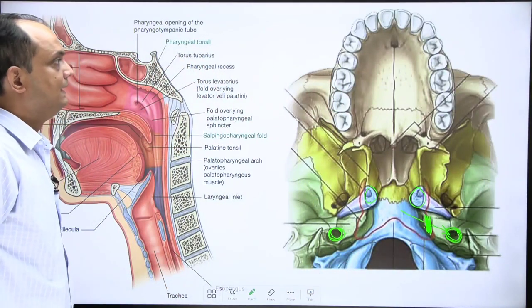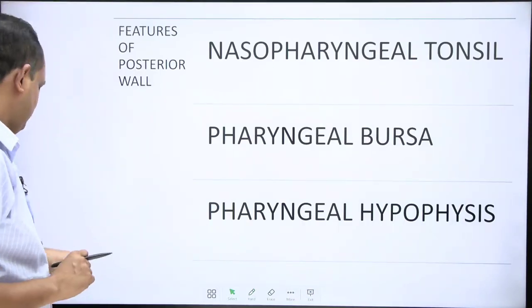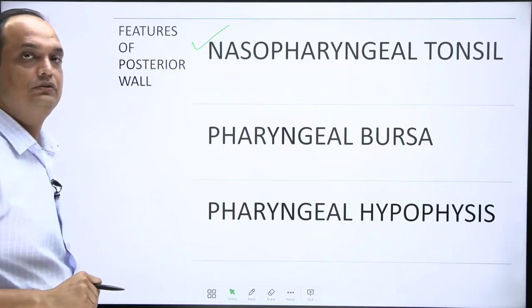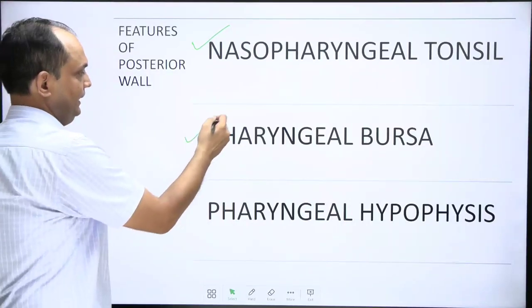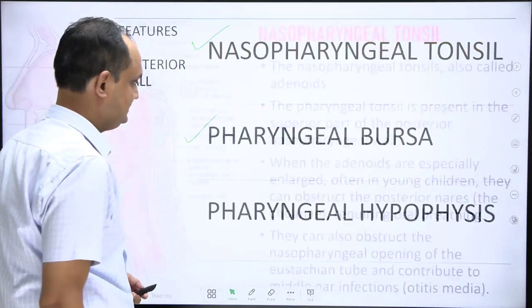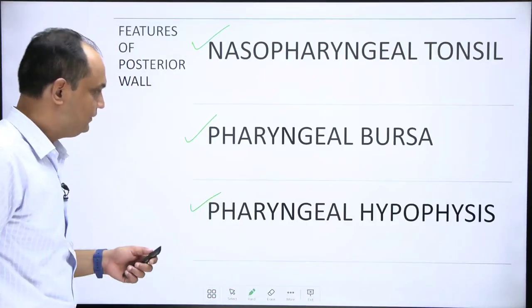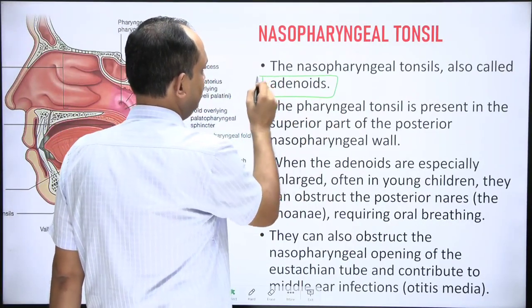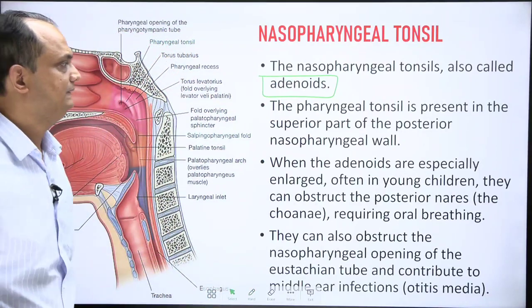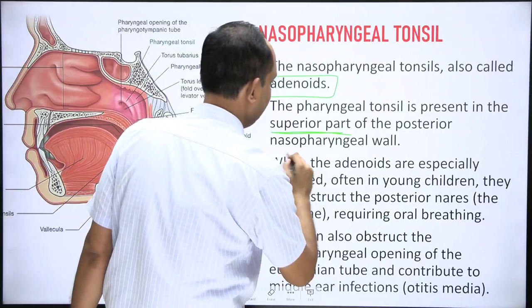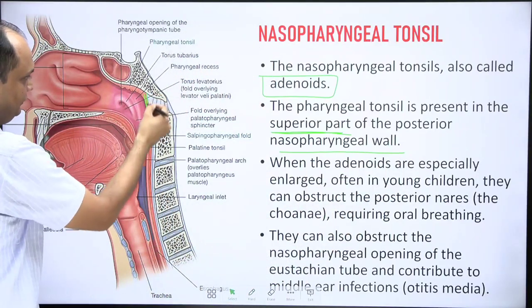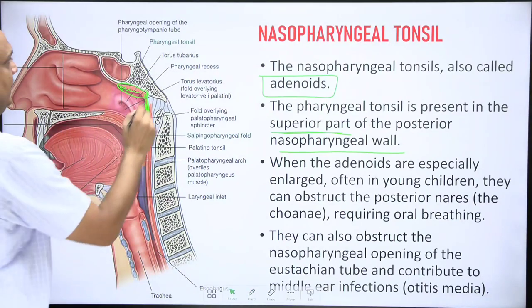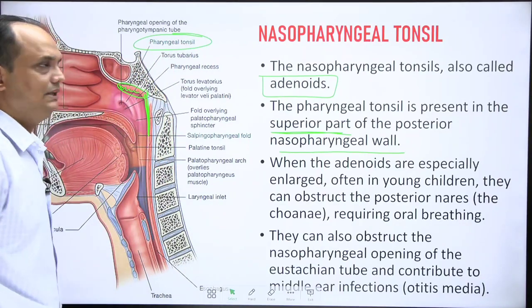The features of the posterior wall include the nasopharyngeal tonsil, the pharyngeal bursa, and the pharyngeal hypophysis. The nasopharyngeal tonsil is present in the superior part of the posterior nasopharyngeal wall. When enlarged in children, nasopharyngeal tonsils are known as adenoids. You can see these tonsils in the posterior nasopharyngeal wall — once enlarged, they are referred to as adenoids.